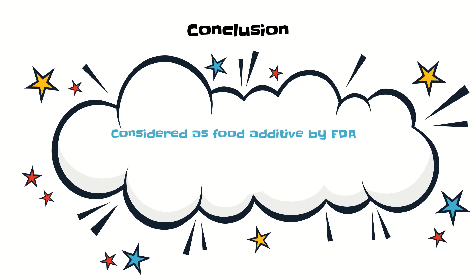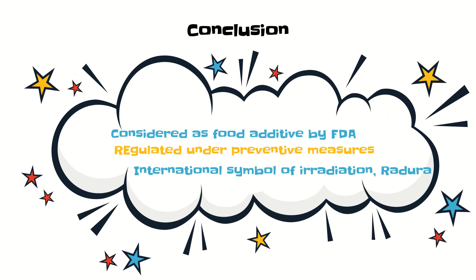Food irradiation is considered a food additive by the FDA — the Food and Drug Administration — and it is regulated under preventive measures so that it cannot cause any harm to human health. Another important thing is that the international symbol of irradiation is Radura, which is present on all food products that are irradiated.